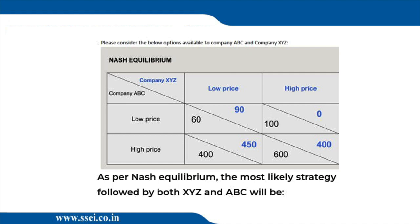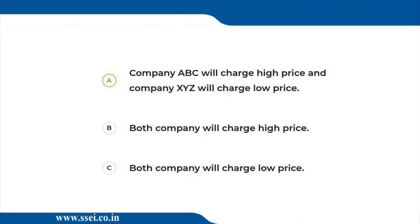Similarly, if XYZ charges a high price — the last column — the figures for ABC are 100 and 600. Which one is higher? 600. That means once again ABC should charge a high price. The conclusion is that ABC should charge a high price and XYZ should charge a low price. That is the box with 400 and 450 — so that is the Nash equilibrium: option number A.